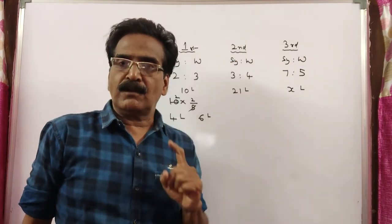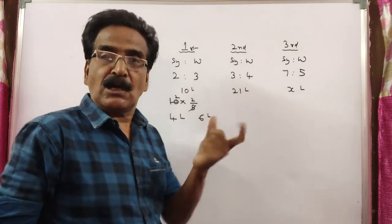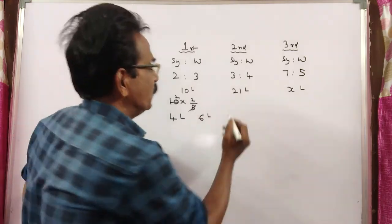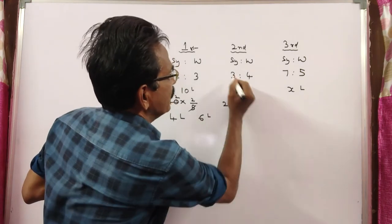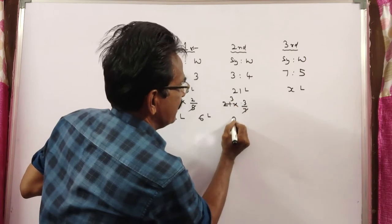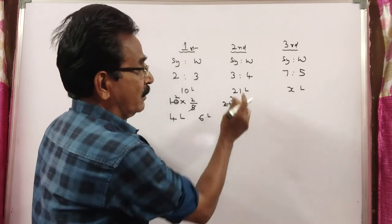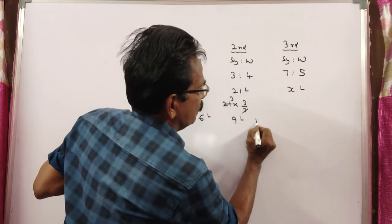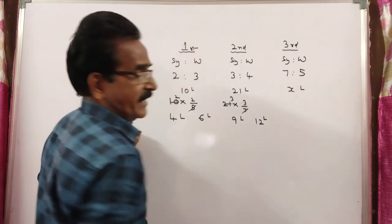From the second bottle, we have drawn 21 liters. So how much syrup is drawn? 21 into 3 by 7. 3 by 7, 9 liters syrup is drawn. 21 minus 9, 12 liters water is drawn.